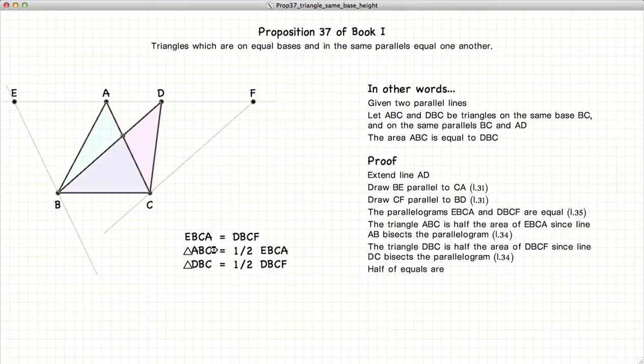we have that the area of ABC is equal to DBC. In other words, these two triangles are equal in area.